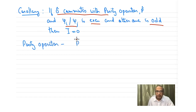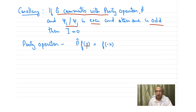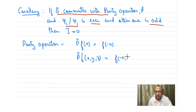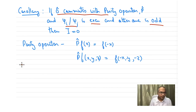The parity operator is denoted by P. Applied to a function of one variable, P·f(x) gives f(−x). For a function of three variables, all three variables get inverted in sign: (−x, −y, −z). It is like flipping a function through the origin.